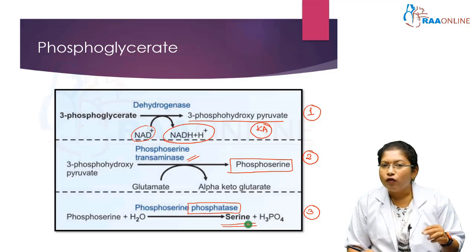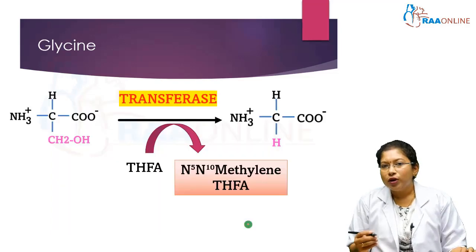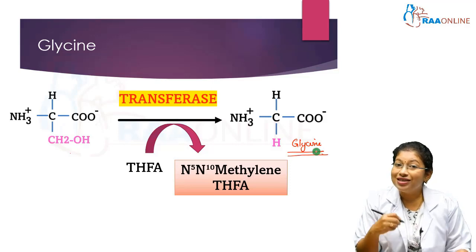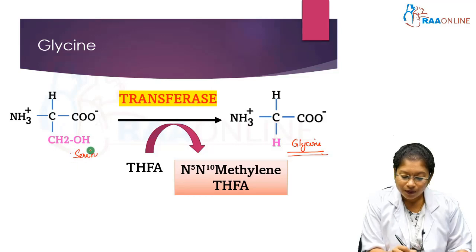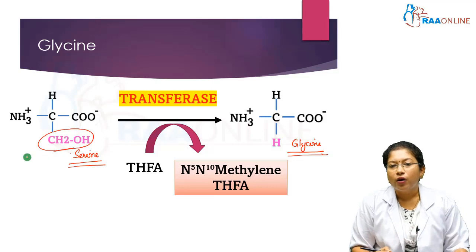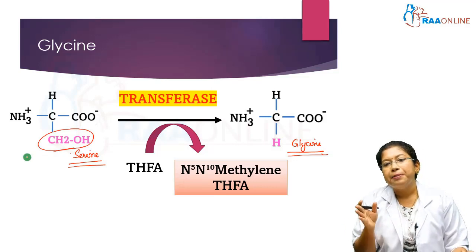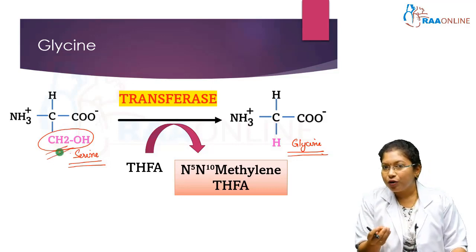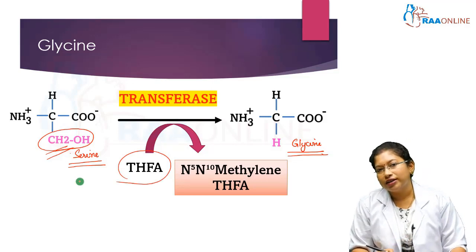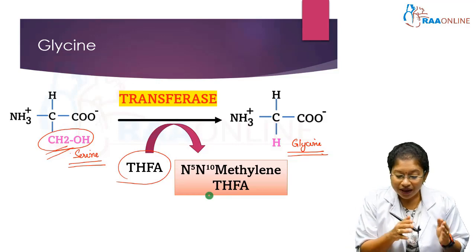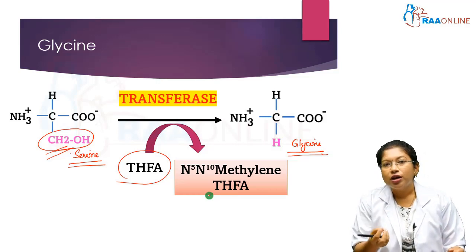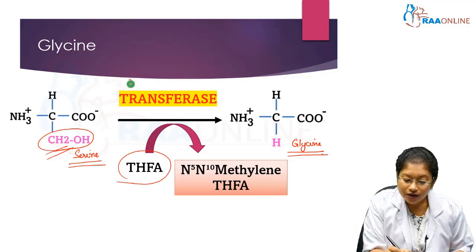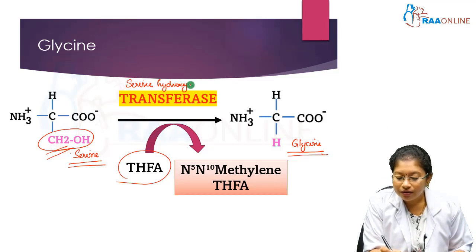The second way of synthesizing serine is from glycine. The difference between glycine and serine is one methyl group. You transfer the methyl group to tetrahydrofolic acid, otherwise known as tetrahydrofolate, which becomes N5,N10-methylene tetrahydrofolic acid. The enzyme here is serine hydroxymethyltransferase, and by this reaction you can synthesize glycine.